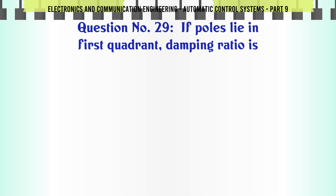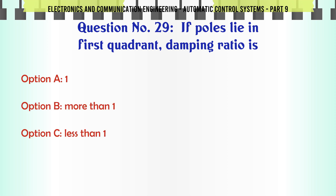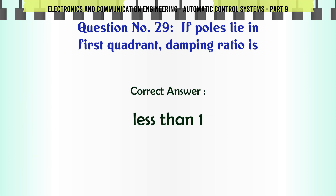If poles lie in the first quadrant, damping ratio is: A. 1, B. More than 1, C. Less than 1, D. 0. The correct answer is: Less than 1.